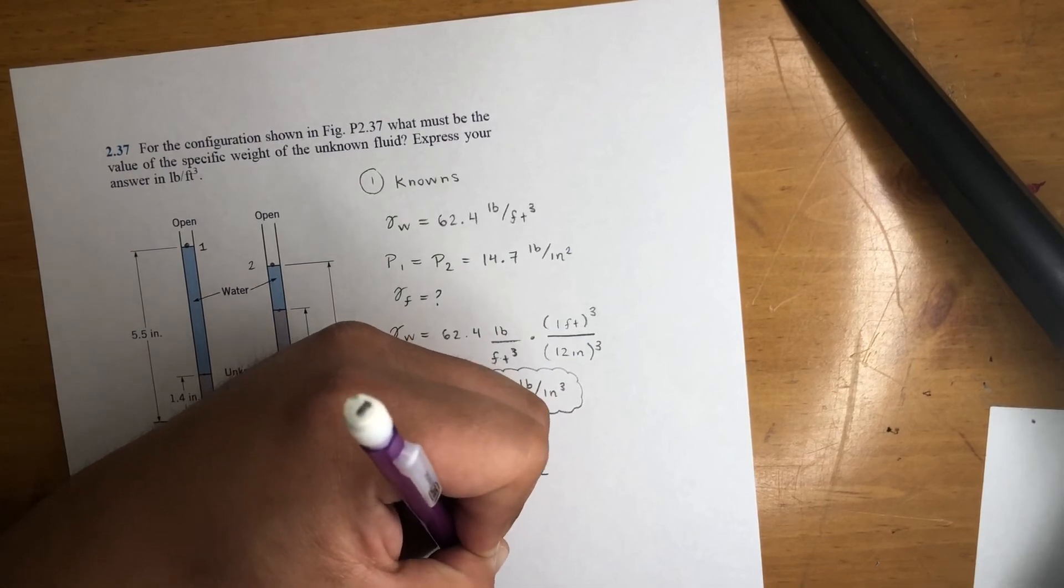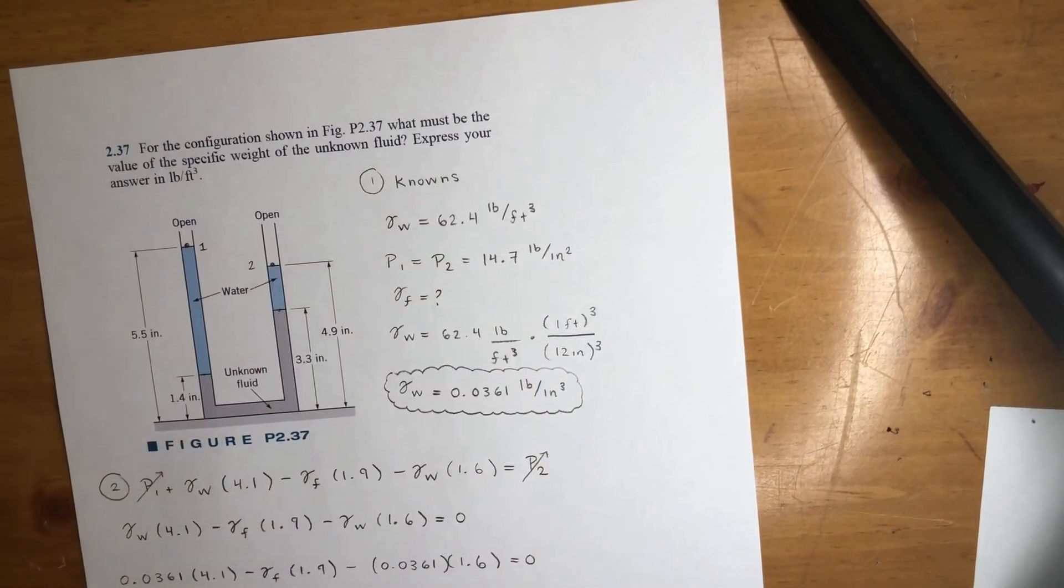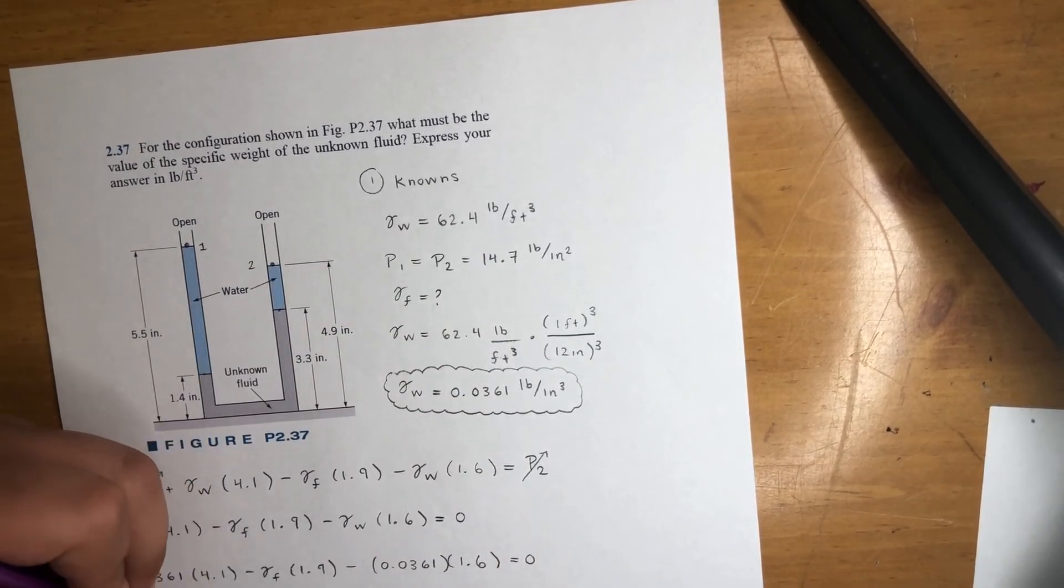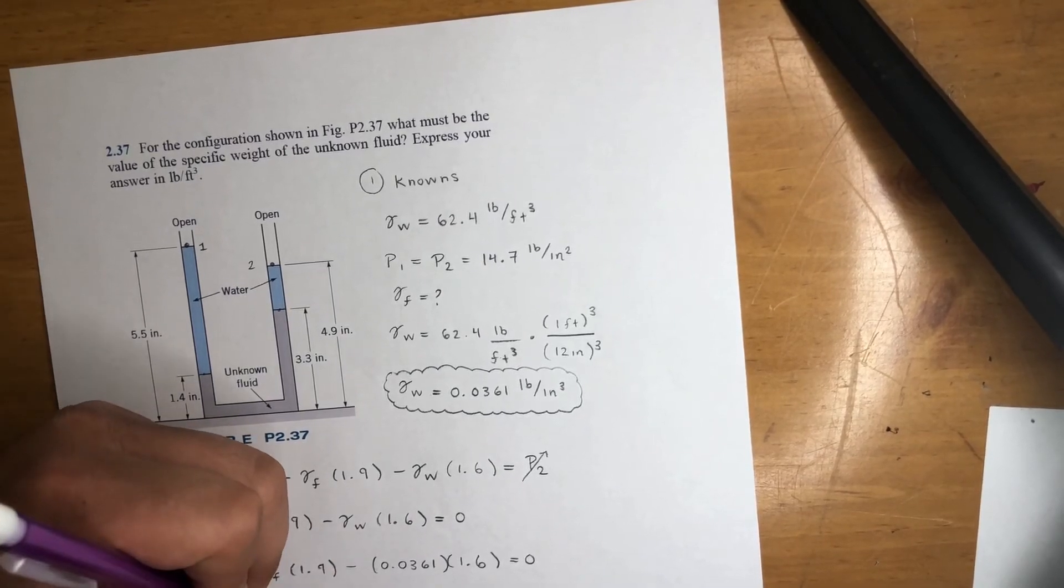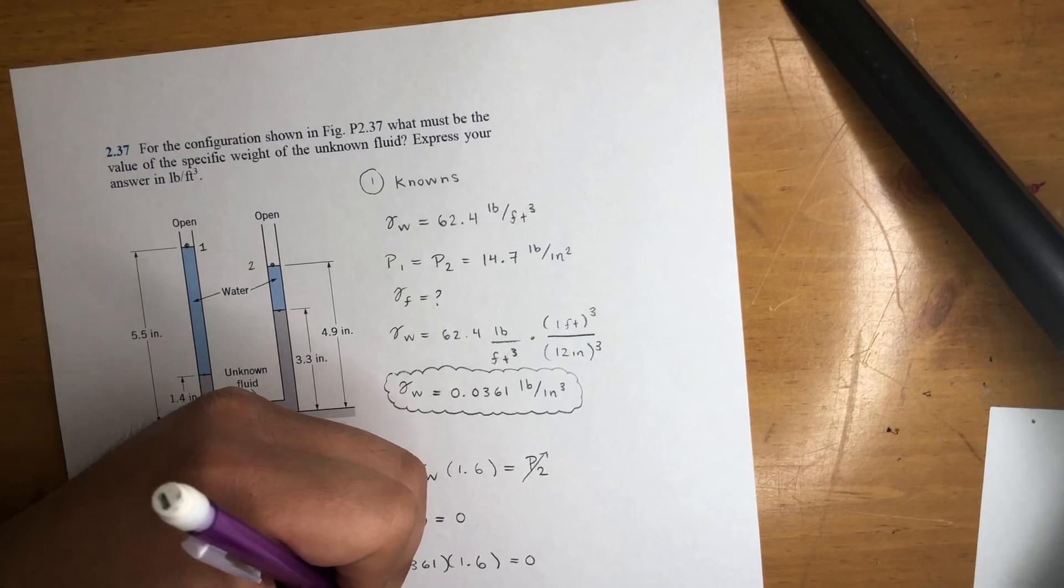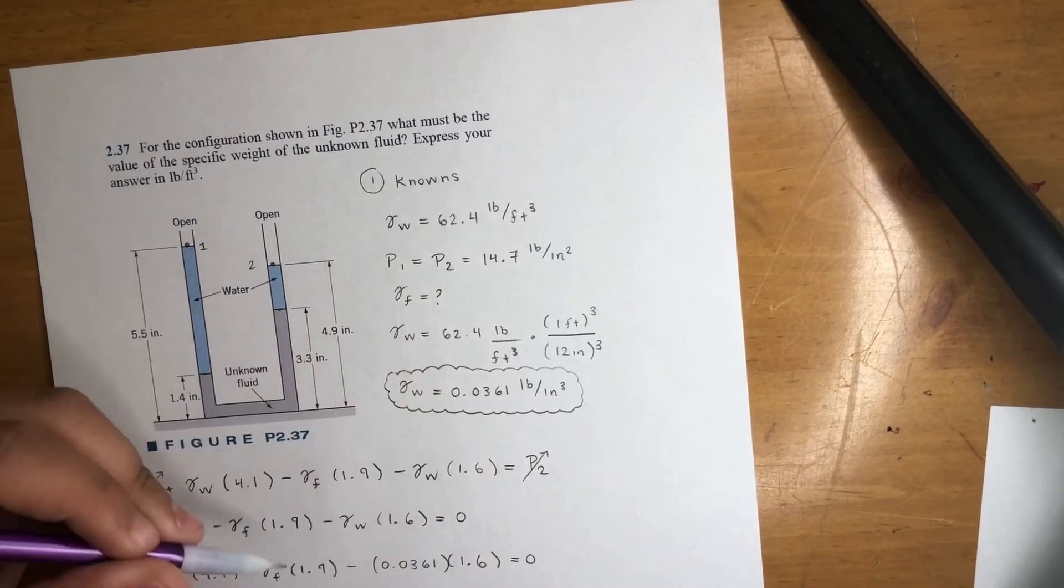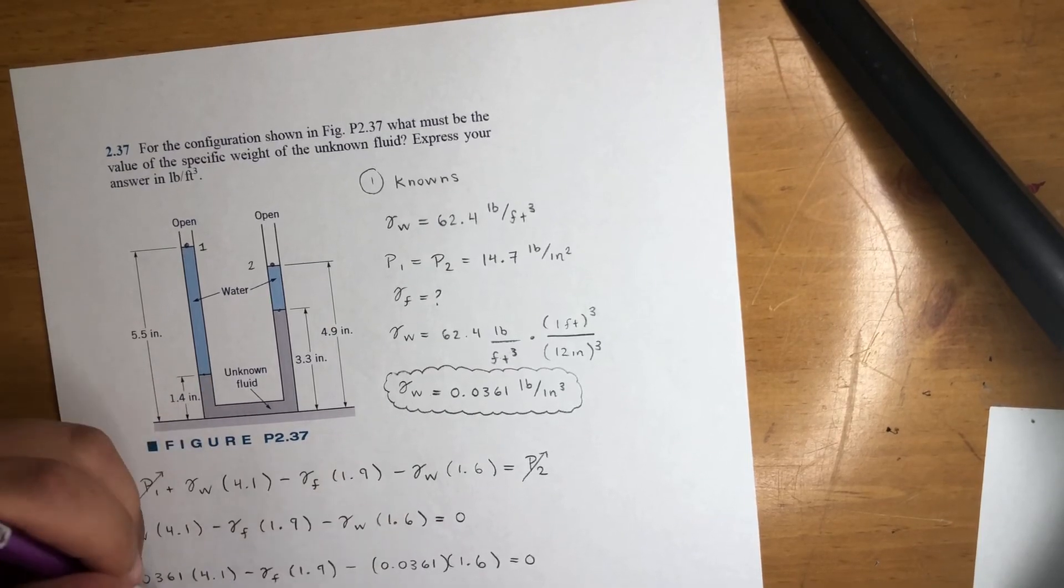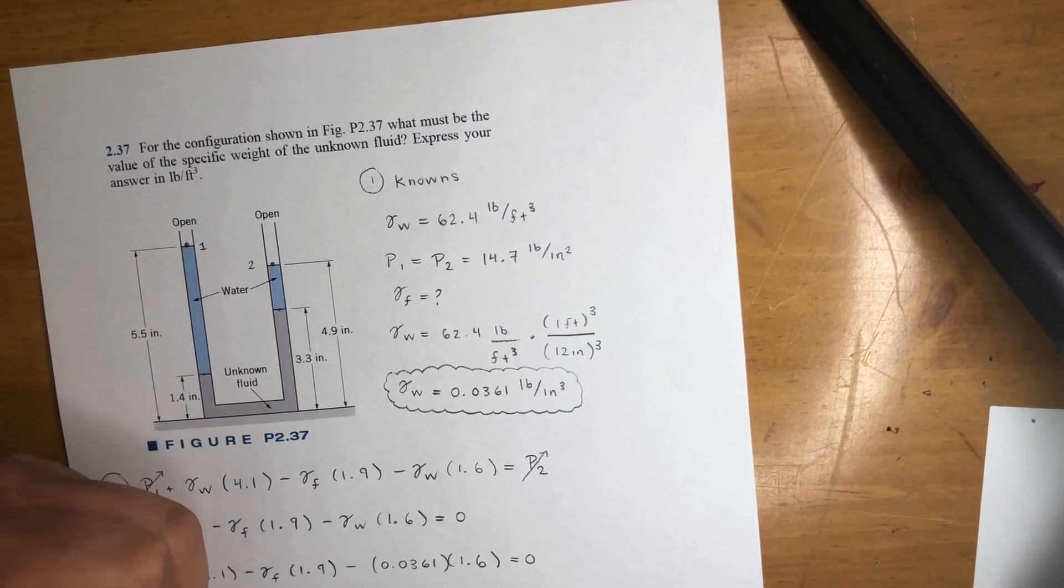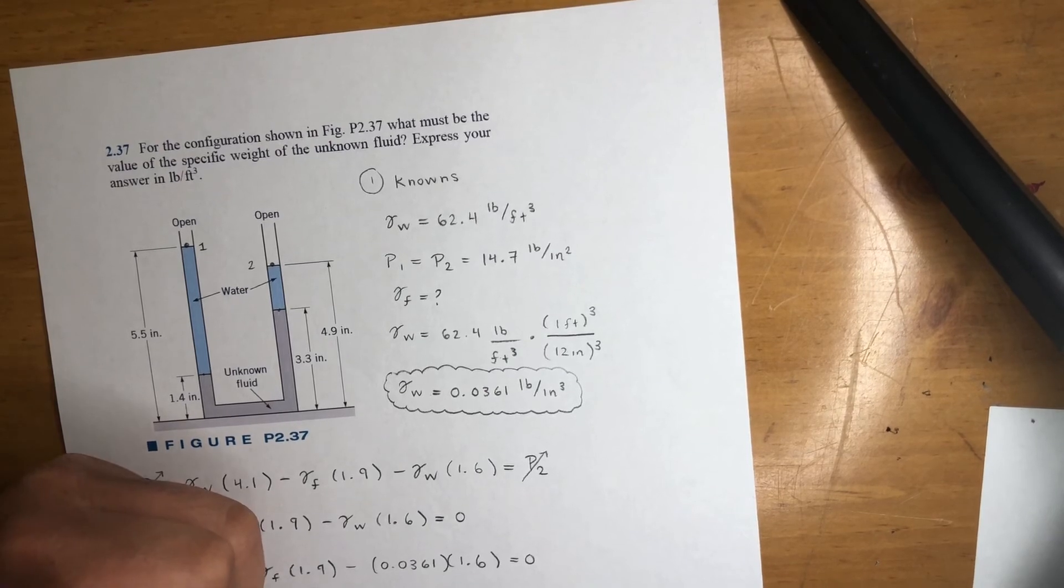Let's just plug in the numbers for gamma. 0.0361 times 4.1 minus gamma f 1.9 minus 0.0361, specific weight of water, times 1.6 equals zero. Do the math. This number minus this number, you can move this over here to make things easier, but you should end up getting 0.14801 minus 0.05776 is equal to gamma f 1.9. I just moved that over there. Do the math, you end up with gamma f is equal to 0.04765 pounds per inch cubed.